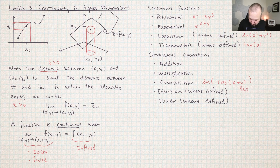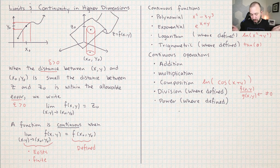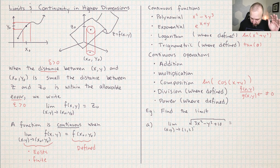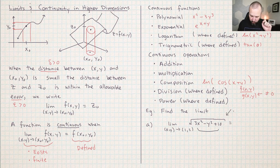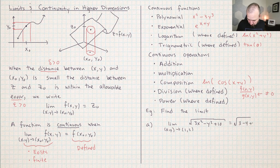Be ready for situations like f(x,y) over g(x,y) where the denominator cannot equal zero — same with powers, like a square root, where you have to be careful about when things produce undefined values. I'm asked to calculate the limit of this function, which is the composition of a polynomial and a power function. So long as this is defined, it is continuous, and since it's continuous, I can just plug in (1, 2) and get the answer. Let's check: the square root of 3(1²) minus 2² plus 10 is the square root of 9, which is 3. Some of these problems are just giveaways.